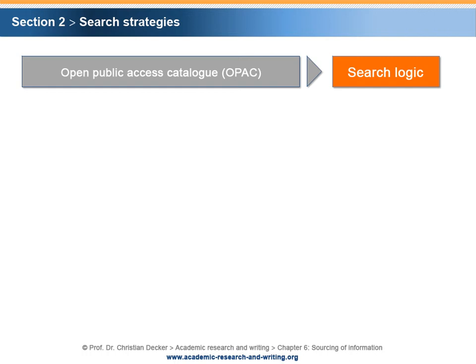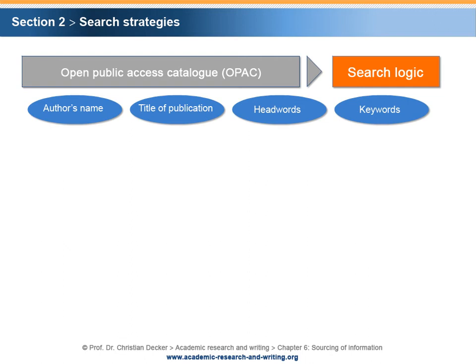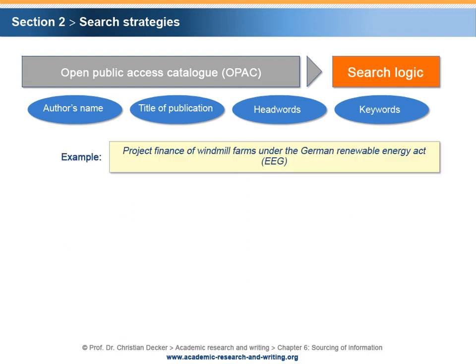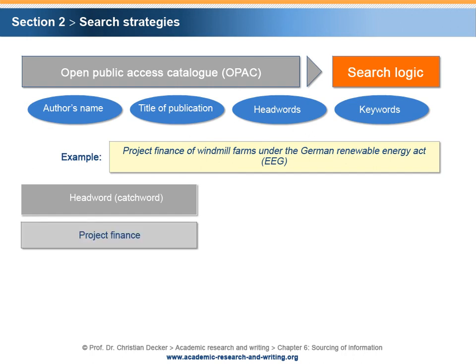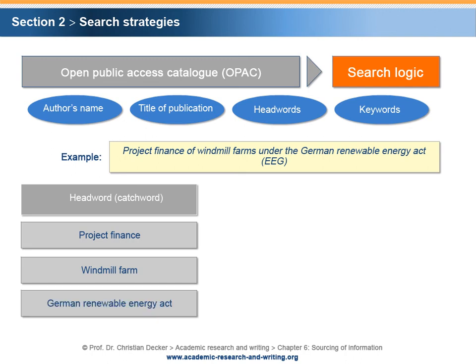Typically, OPACs provide different search option criteria, such as author's name, title of publication, headwords, or keywords. In particular, searching for headwords and keywords are powerful options. The difference between headwords and keywords can be demonstrated by the sample topic 'Project Finance of Windmill Farms under the German Renewable Energy Act.' Headwords are catchwords that can be extracted directly from the title. Accordingly, headwords of the sample topic could be Project Finance, Windmill Farm, and German Renewable Energy Act.